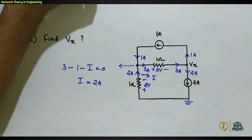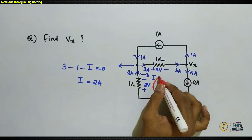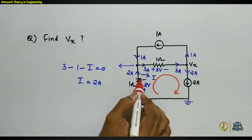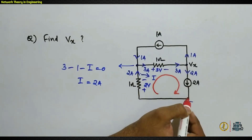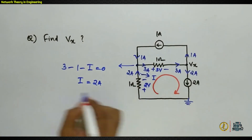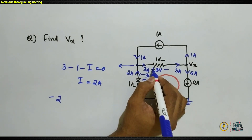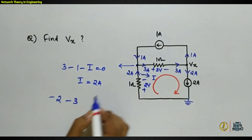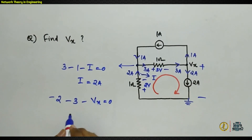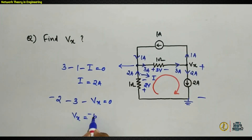To find VX, take a KVL loop where the only unknown voltage is VX. Traversing the loop: +to− gives −2 volts, then −3 volts, then −VX. Writing KVL: −2 − 3 − VX = 0, so VX = −5 volts. That is the value of VX.